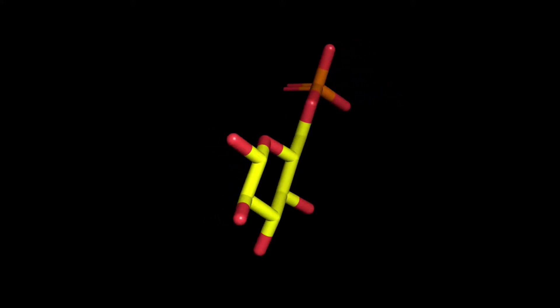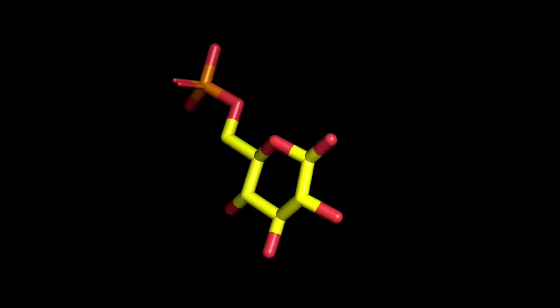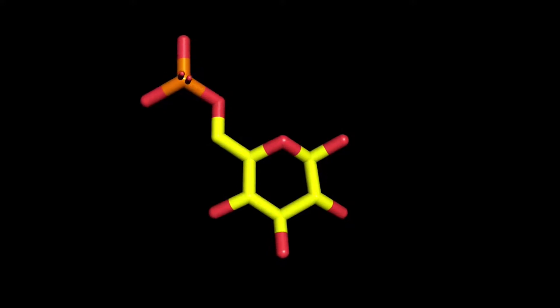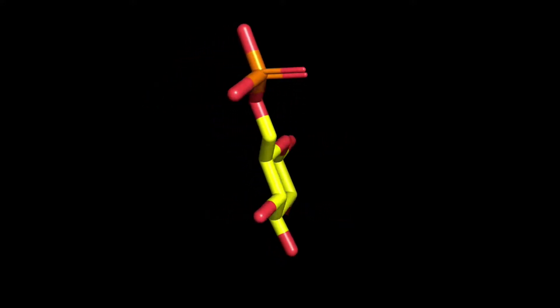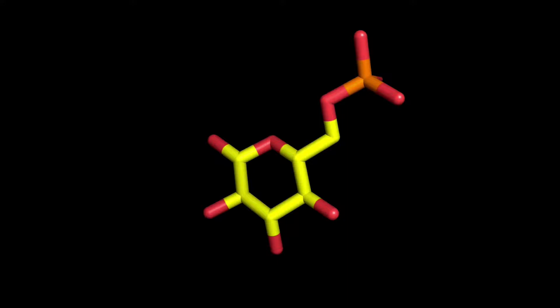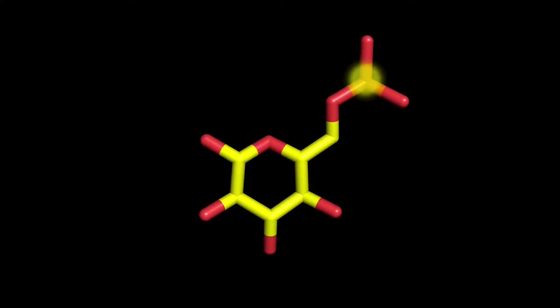Now let's compare this to the product of the reaction, glucose 6-phosphate, which I'll call G6P. We have a new CPK color to introduce here. Phosphorus atoms are orange.